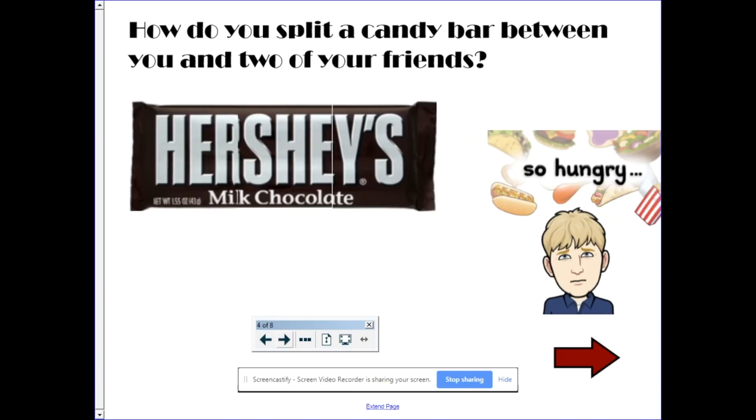How do you split a candy bar between you and two of your friends? So you have you, one friend, two friends. There's three people. Well, each person would get one-third. One candy bar split between three people. 1 divided by 3.